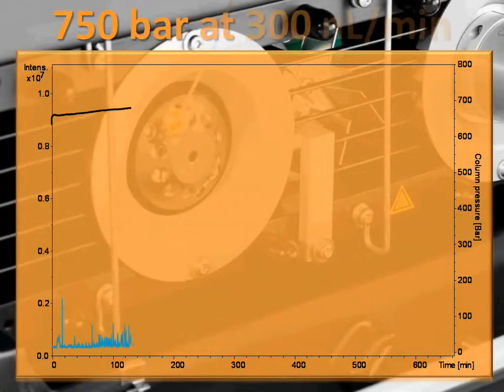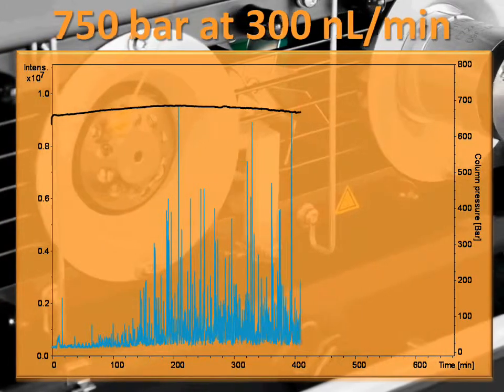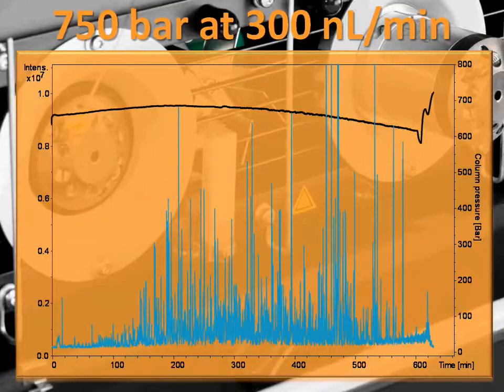Here we can see incredible resolution with a peak capacity of over 700 achieved by running at close to 750 bars at a flow rate of 300 nanoliters per minute.